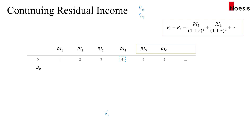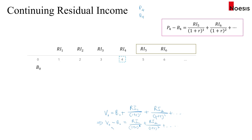This links back to the residual income model: V0 = B0 + RI1/(1+r) + RI2/(1+r)² + ... The difference (V0 − B0) represents the PV of all future residual income. Applying the same logic at period four, P4 − B4 captures the PV of residual income from year five onwards.